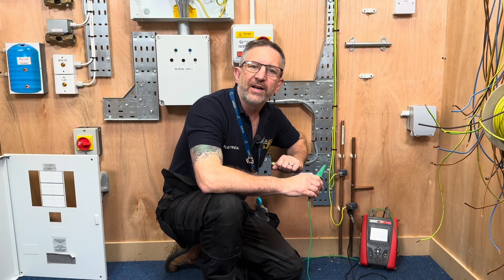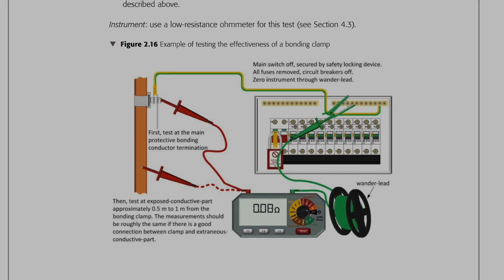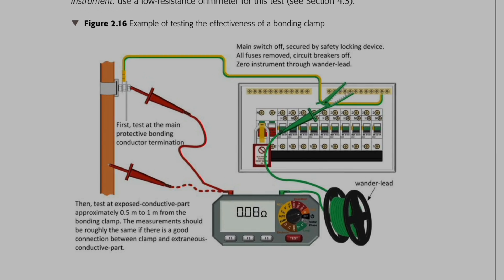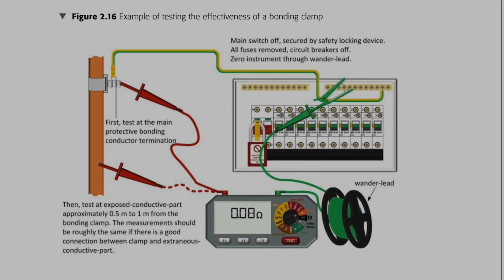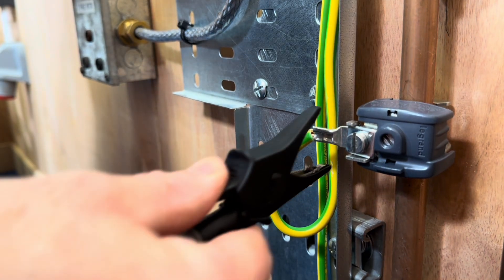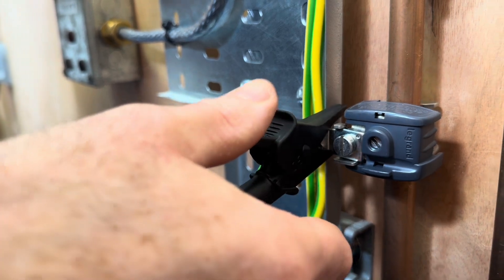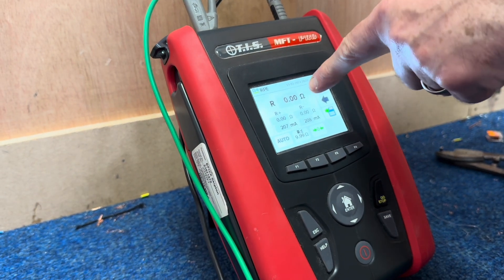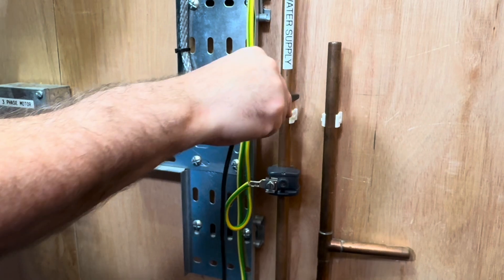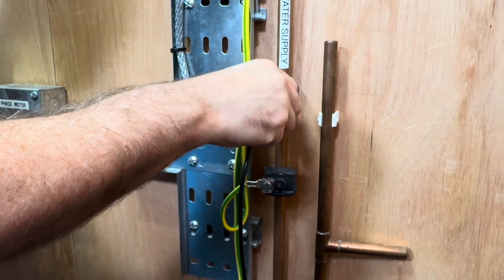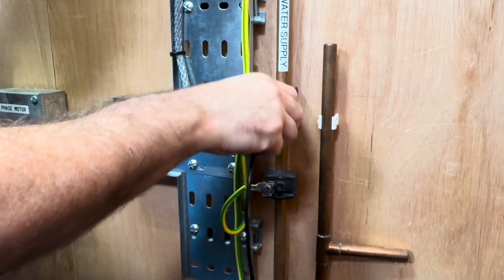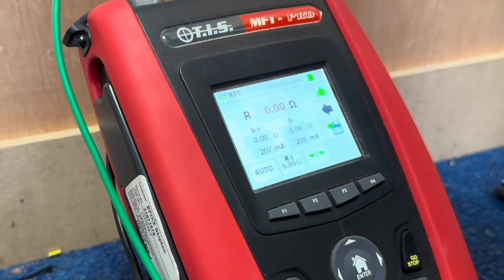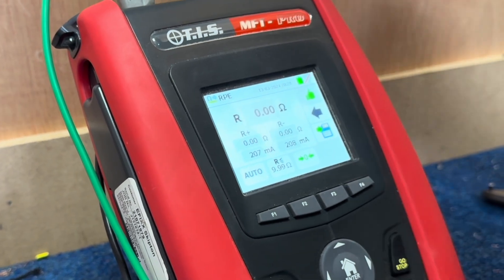We also need to test the effectiveness of a bonding clamp, as shown in figure 2.16 of Guidance Note 3. We test up to the clamp first to verify continuity, then move between 0.5 to a metre away from the clamp. This is to ensure the resistance of the extraneous conductive part is sufficiently low.